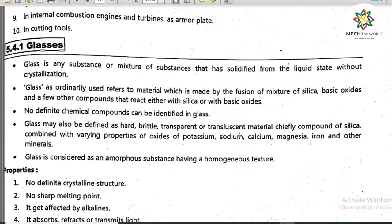The rate of transformation from liquid state to solid state is very much faster in the case of glass. Glass as ordinarily used refers to materials made by fusion of mixtures of silica, basic oxides, and a few other compounds that react either with silica or with basic oxides. No definite chemical compounds can be identified in glass.